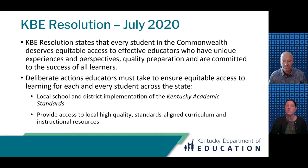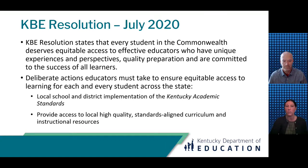To address student equity, in July of 2020 the Kentucky Board of Education passed a resolution affirming its commitment to equity in Kentucky public schools. That resolution states that every student in the Commonwealth deserves equitable access to effective educators who have unique experiences and perspectives, quality preparation, and are committed to the success of all learners.